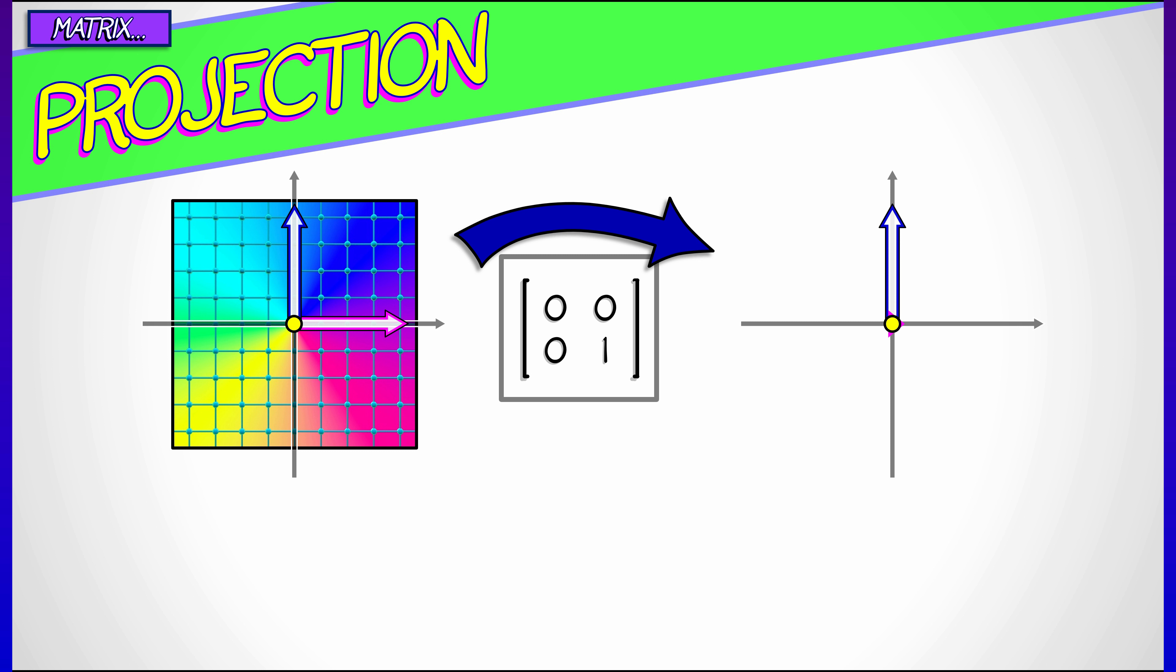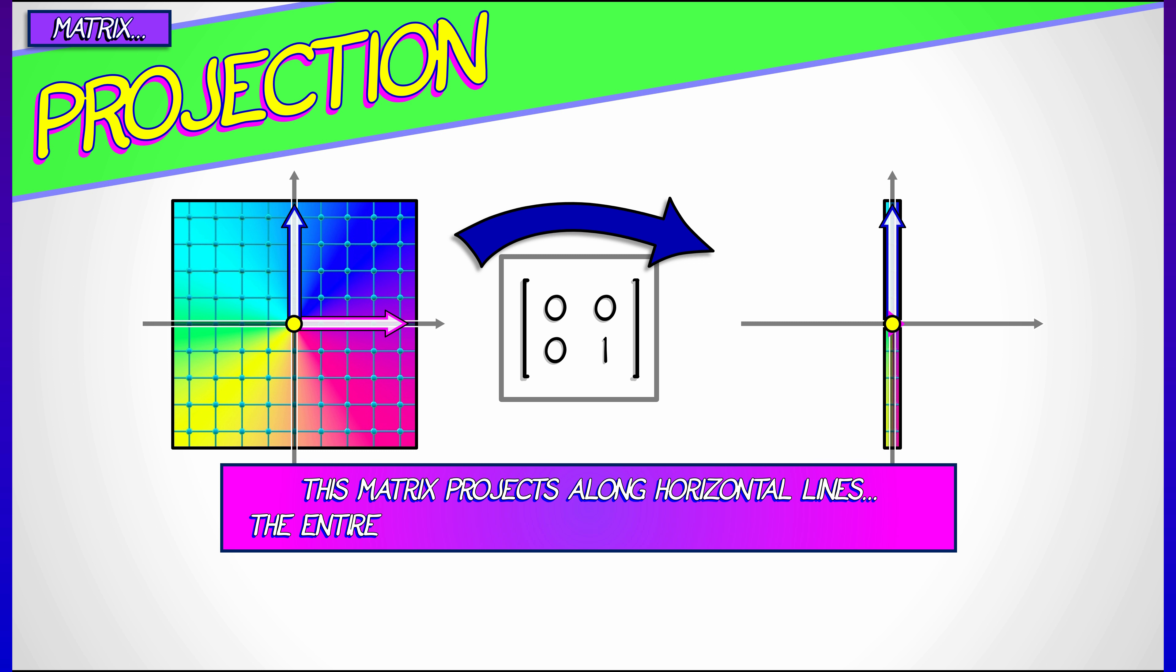Now, if we take this to an extreme example where one of the diagonals is 0, then what we get is something called a projection. In this case, 0, 0, 0, 1. What this does is it sends the i vector to the 0 vector.